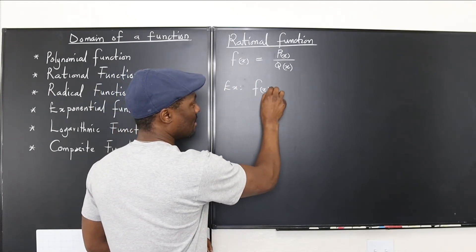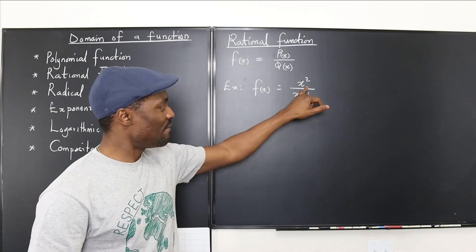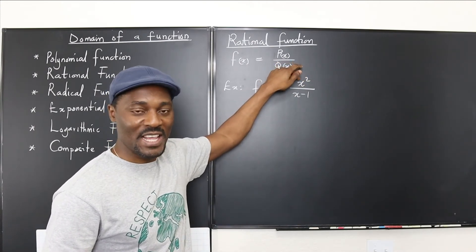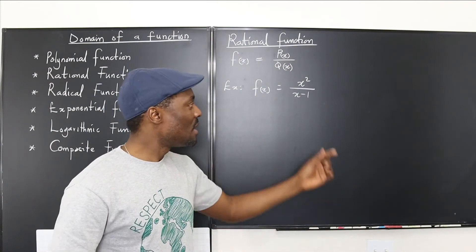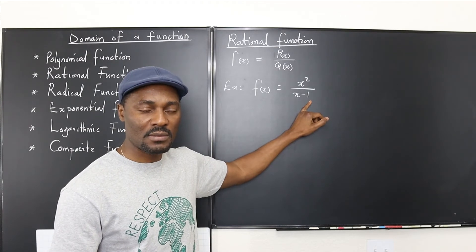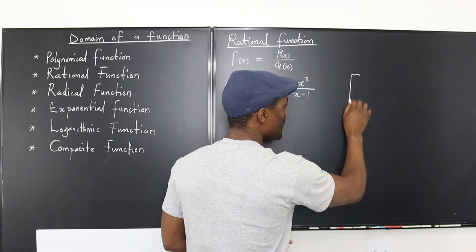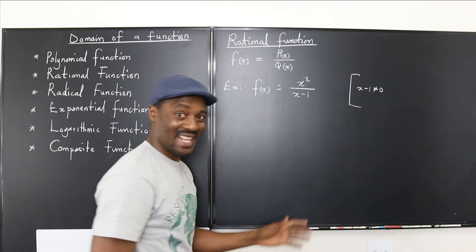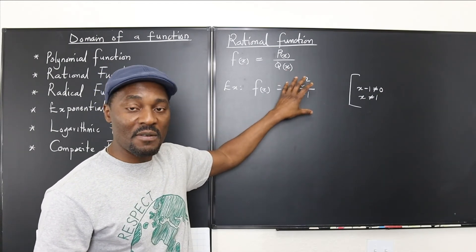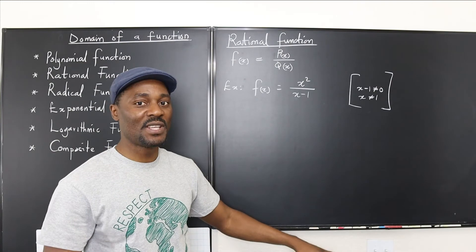If you have f(x) = x² / (x − 1), this is a rational polynomial. Every number can be squared, so the numerator is not a problem — never focus on the numerator in a rational expression; it goes from negative infinity to positive infinity. You should worry about the denominator. Ask yourself: will I ever have a value of x that makes this equal to zero? Yes — when x equals 1. So x minus 1 cannot be equal to zero, which happens when x is not equal to 1.